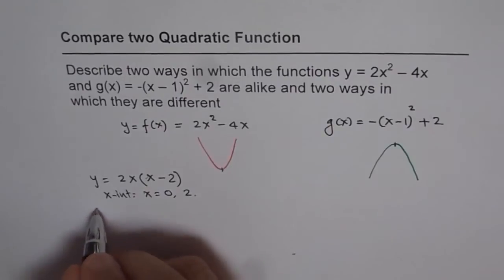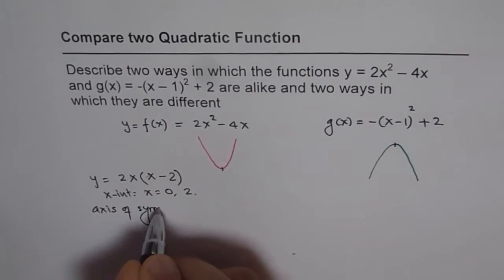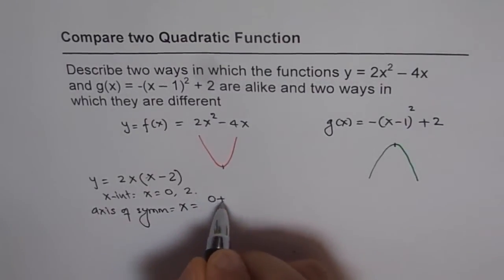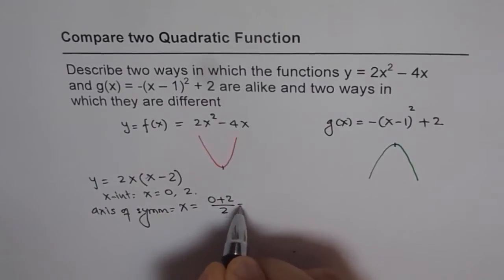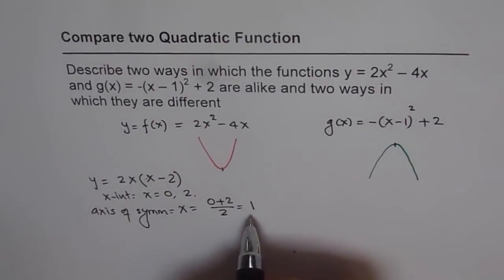So I have x-intercepts at x equals 0 and at 2. And therefore, my axis of symmetry will be midway between them. So we can say x equals (0 plus 2) divided by 2, which is at x equals 1.